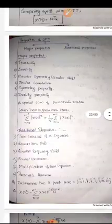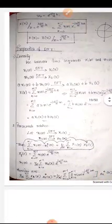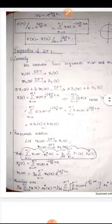Both categories together have 12 properties. You have to study at least 10 properties and the proof of each property. Next, we can consider the properties one by one. The first property we are discussing is linearity.